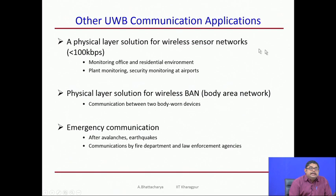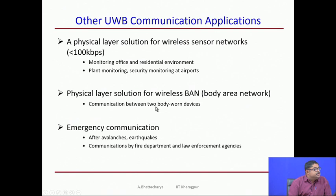Other UWB communication applications include wireless sensor networks operating at typically less than 100 kbps for monitoring office and residential environments, plant monitoring, and security monitoring at airports. Wireless body area network communication between body-worn devices also uses UWB. For emergency purposes — such as after an avalanche or earthquake where no other communication exists — UWB is used to establish communication, as well as by fire departments and law enforcement agencies.